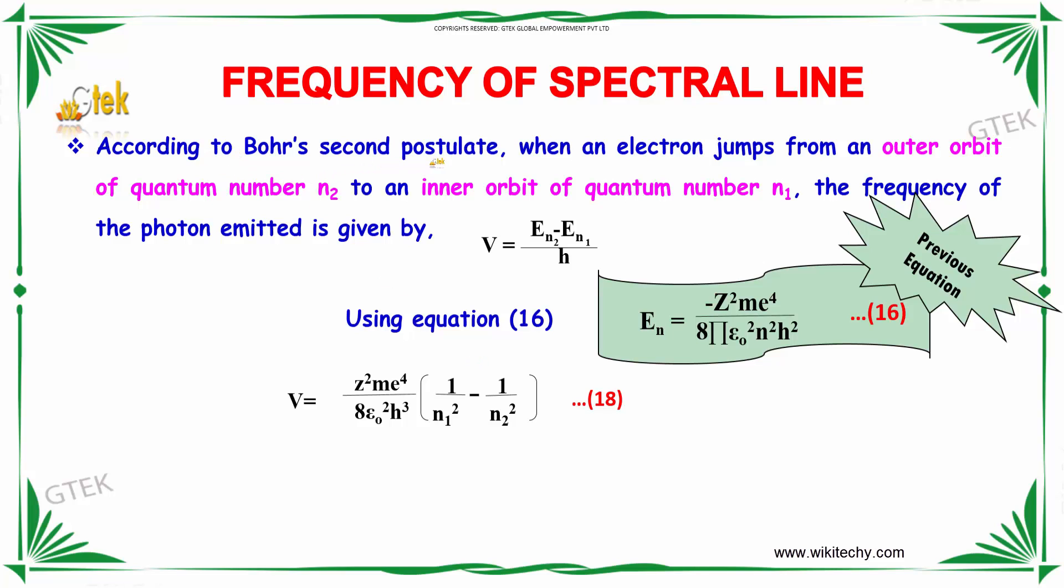If you talk about the frequency of spectral lines, according to Bohr's second postulate, when an electron jumps from an outer orbit of quantum number n₂ to an inner orbit of quantum number n₁...